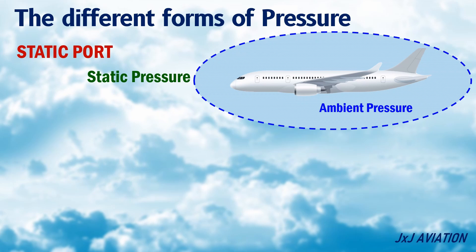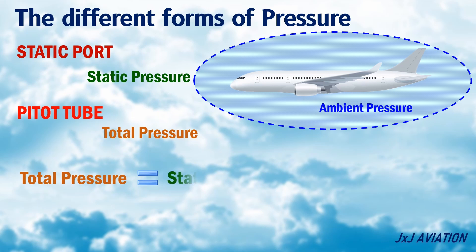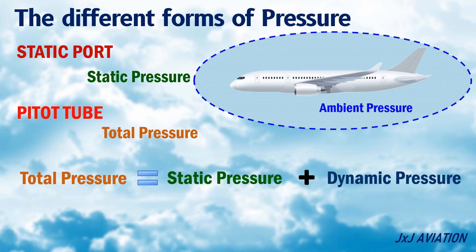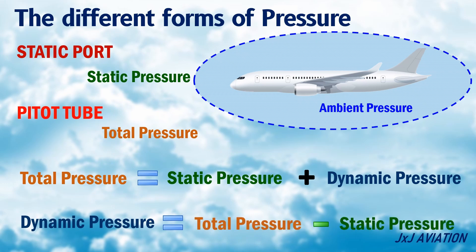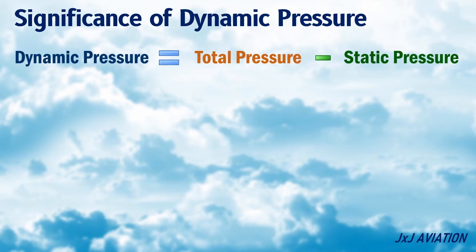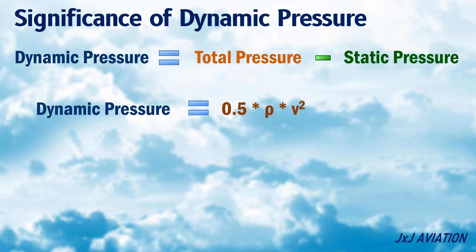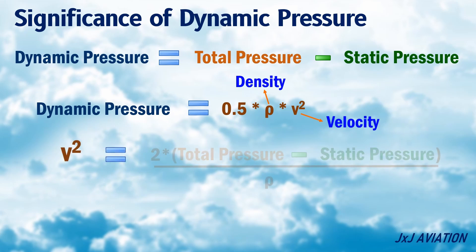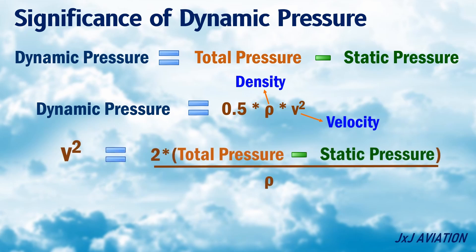The pitot tube measures the total pressure of the air. Total pressure can be defined as the sum of static pressure and dynamic pressure. So the dynamic pressure, which is unknown, can be calculated using this formula. This is the formula for dynamic pressure, where rho is the density of the air and v is the velocity. From this formula, velocity can be calculated because the values of total pressure and static pressure are available from the pitot tube and static port.